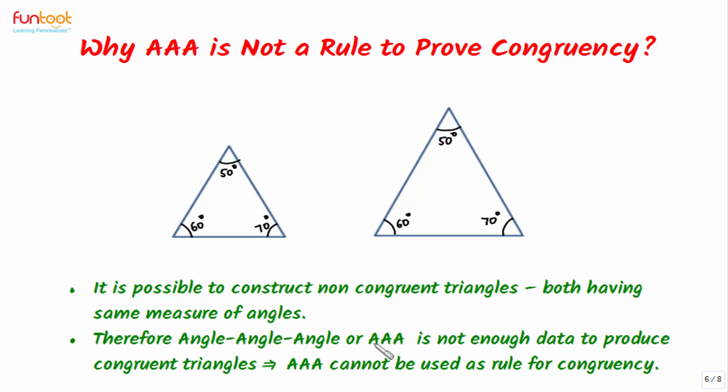Therefore, angle-angle-angle or AAA is not enough data to produce congruent triangles. This implies AAA cannot be used as a rule for congruency.